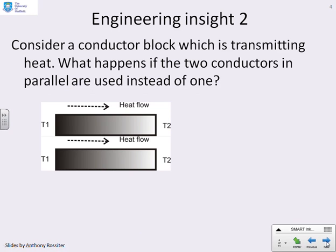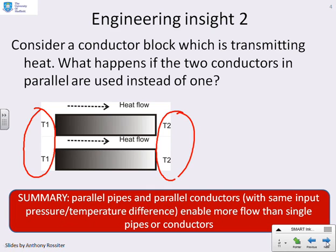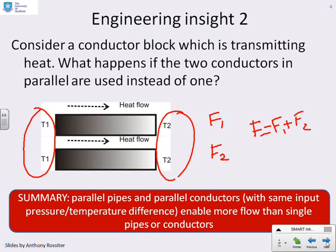It's important that we recognise that for a simple physical system: if you've got more routes that the fluid can flow, you expect more fluid flow. What about a conductor? Here I've arranged two conductors in parallel — they've both got the same temperature T1 on the left and the same temperature T2 on the right. You could imagine this as putting either one or two metal rods into a fire at T1, with the other ends in the room at T2. With two conductors you get flow one and flow two, so the total flow is flow one plus flow two. The heat or energy flow is greater because you've got conductors in parallel. The summary is that parallel pipes or conductors with the same pressure or temperature difference give more flow than a single pipe or conductor.